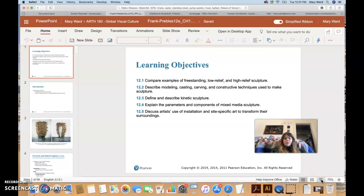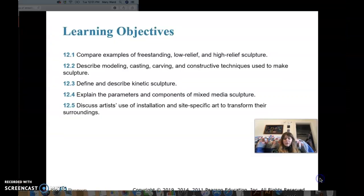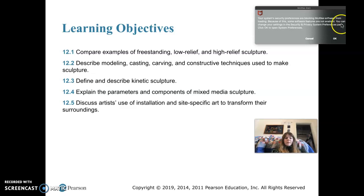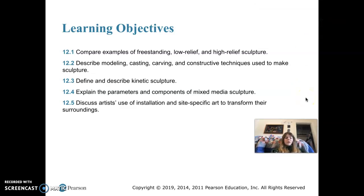We're covering sculpture this week. The learning objectives are: we'll compare examples of freestanding, low-relief, and high-relief sculpture; describe methods of sculpture including modeling, casting, carving, and constructive techniques; define kinetic sculpture; discuss parameters and components of mixed-media sculpture; and discuss artists' use of installation and site-specific art to transform surroundings.